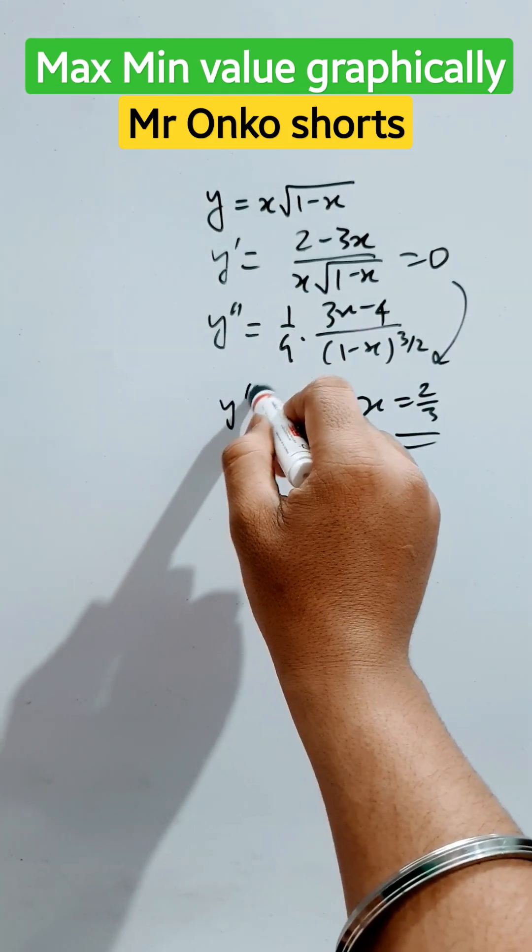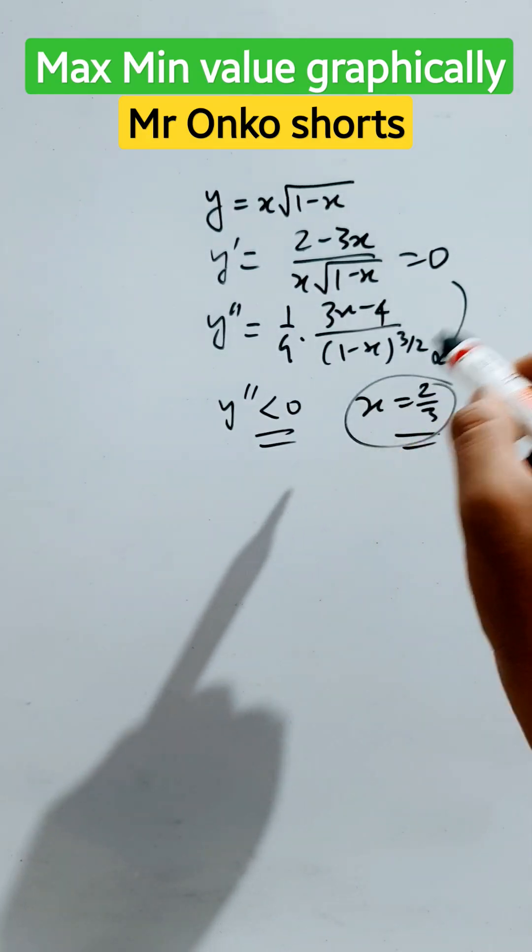For this you will get y double dashed will be less than 0. So, this will give the max value.